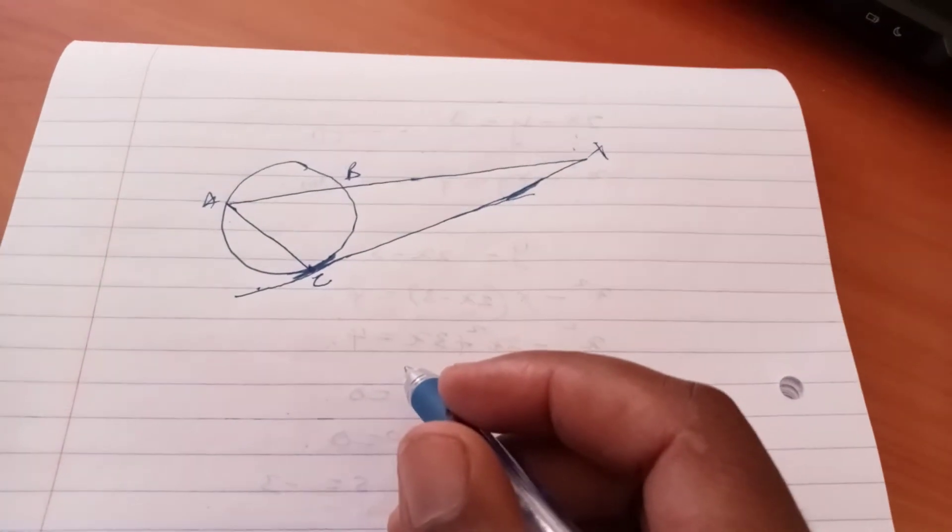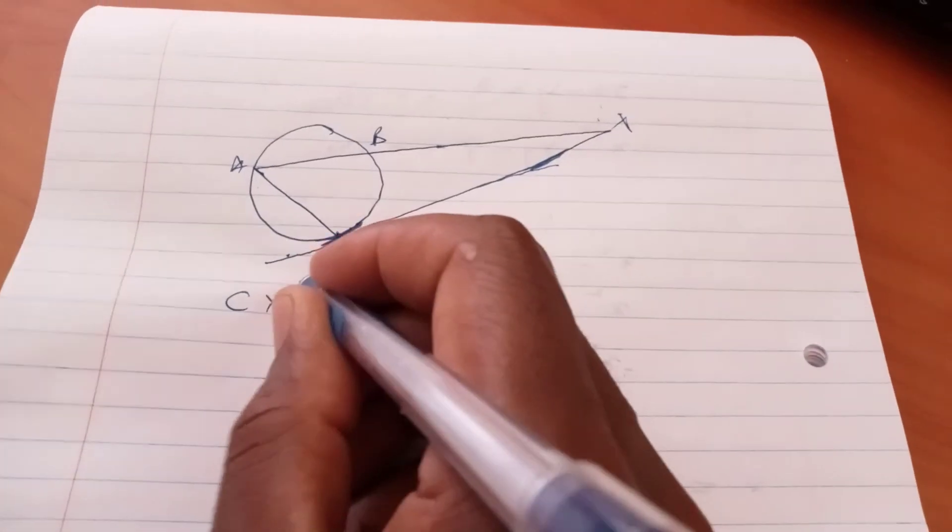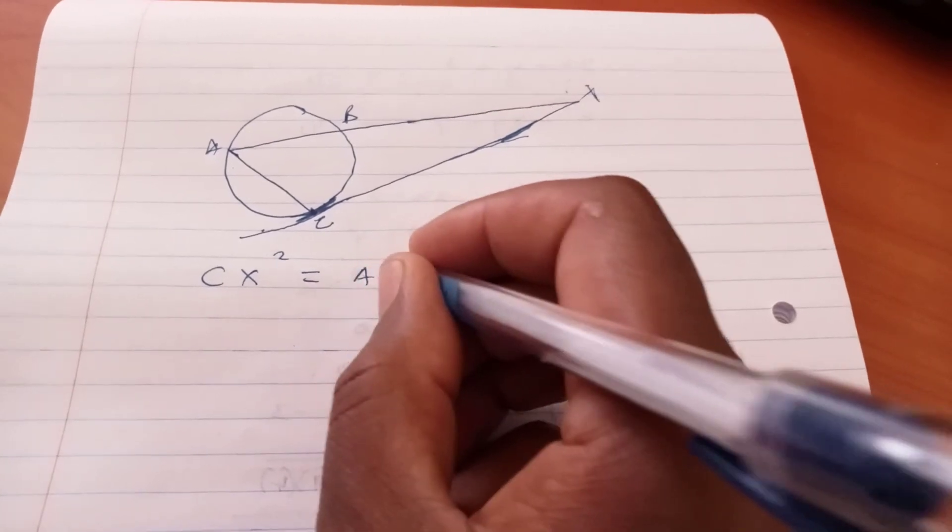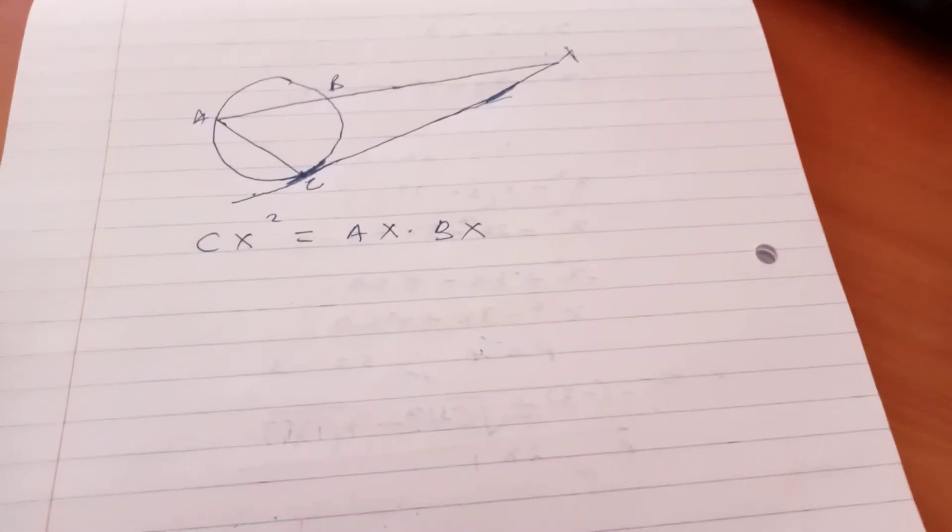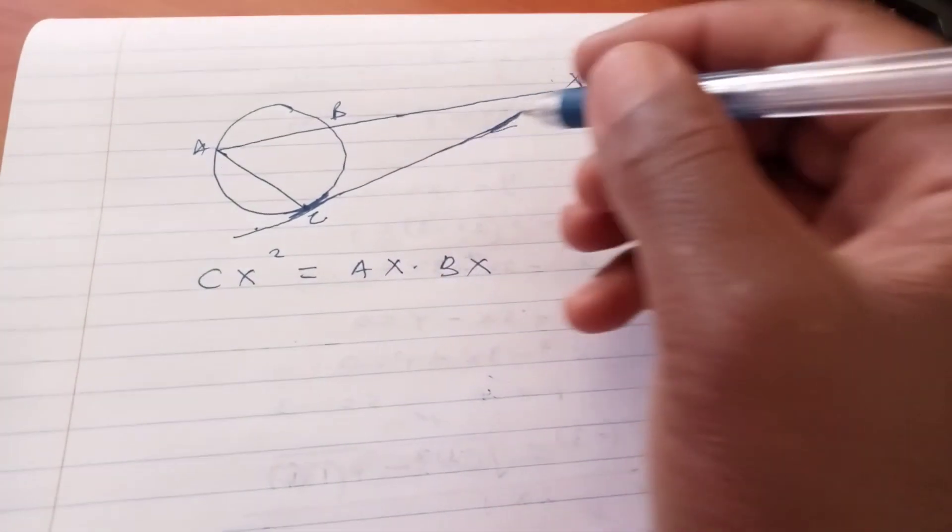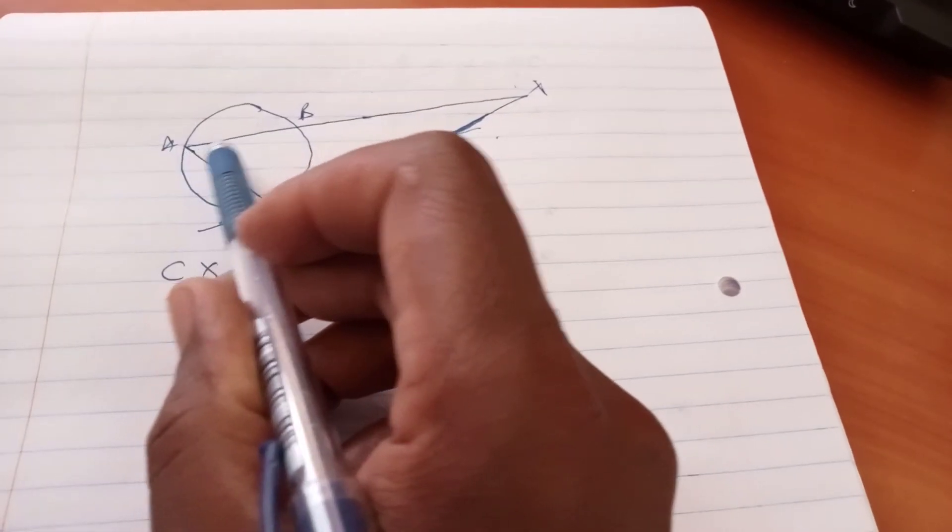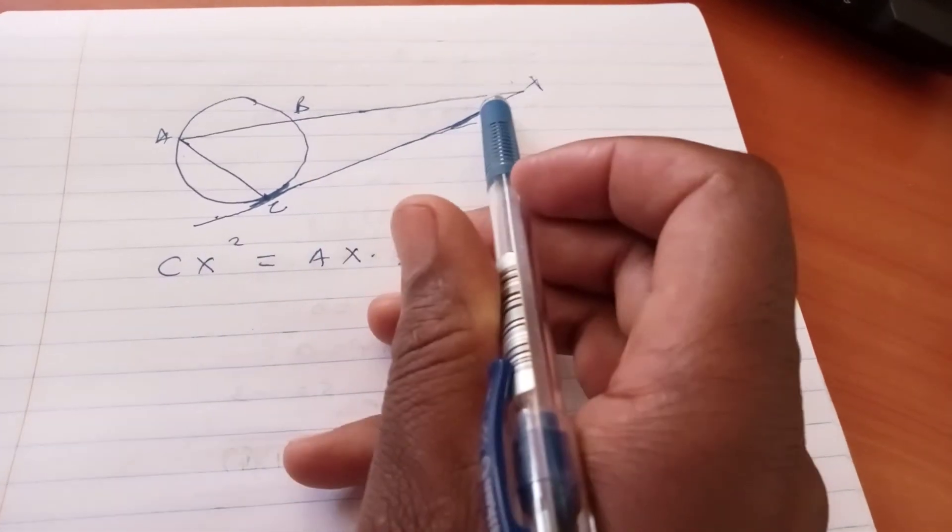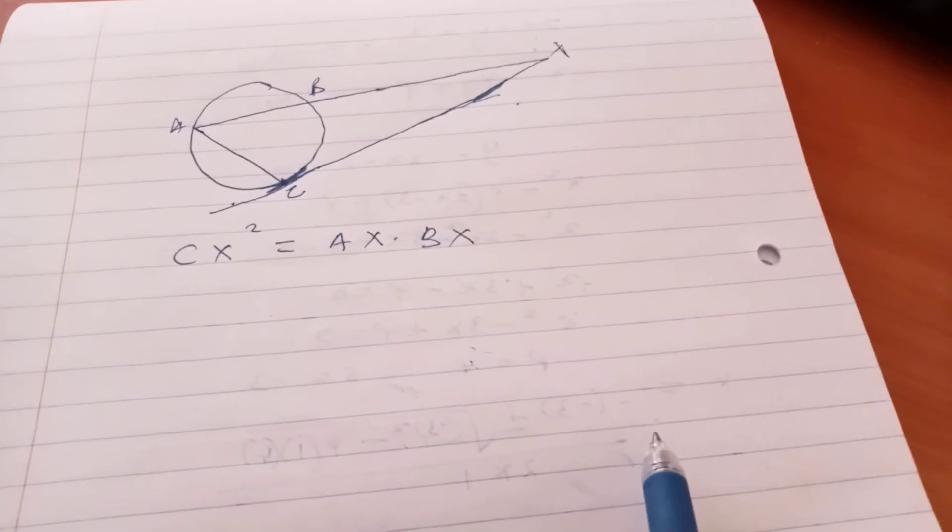Then it goes without saying that CX squared equals AX times BX. That's another relationship which you can use. So let's say you're given this length. You don't have this part from here to here, but from here to here, you already know. So using this formula, you can determine what you don't have.